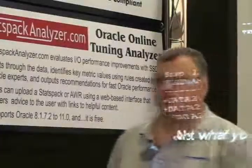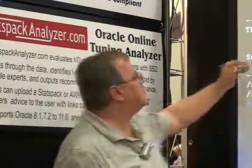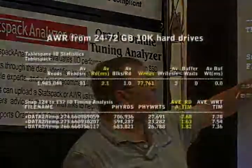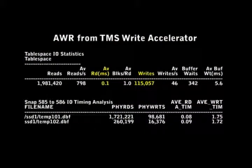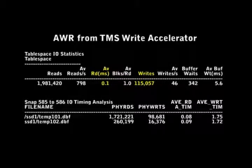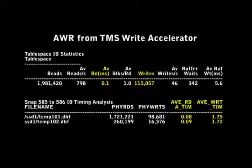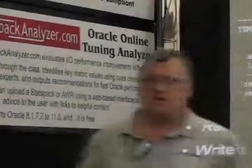This is showing stress in the environment. Using the same exact transaction on the TMS write accelerator with the temporary tablespace placed there, we got not only more reads and writes but our average read milliseconds was 0.1 milliseconds rather than what we saw before. When we do the detail analysis, we can see that our average read time was 0.08 to 0.09 milliseconds, with our average write of 1.75 and 1.7 milliseconds — a dramatic, seven times improvement.